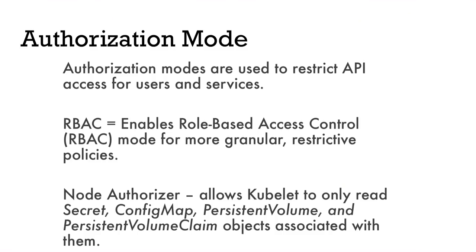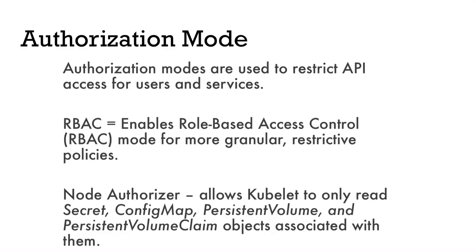There are different authorization modes. Most build tools nowadays will turn on RBAC and also the node authorizer. The node authorizer is nice because it limits what the kubelet can pull from the API server with regards to things like persistent volumes and secrets — if the kubelet doesn't actually own that pod, you can limit what it can do upstream. If you want to limit how bad a kubelet attack is for the rest of your cluster, you definitely want the node authorizer enabled.